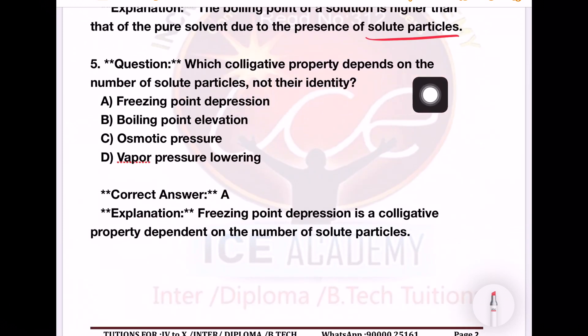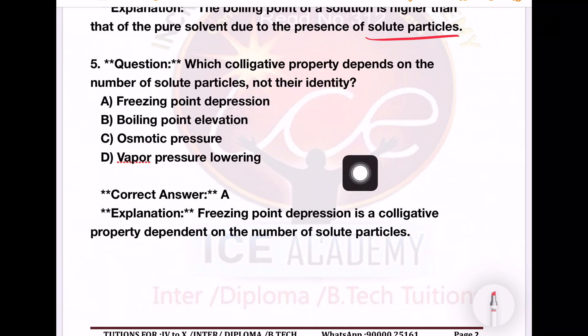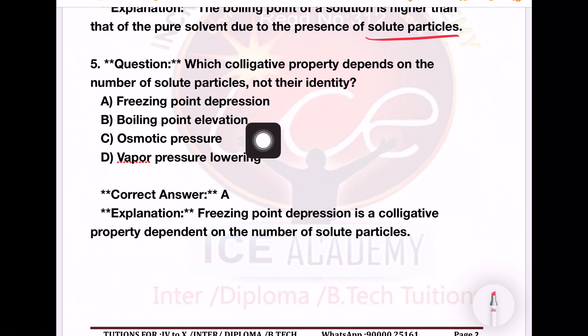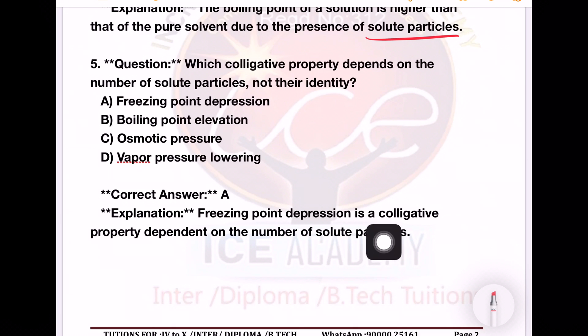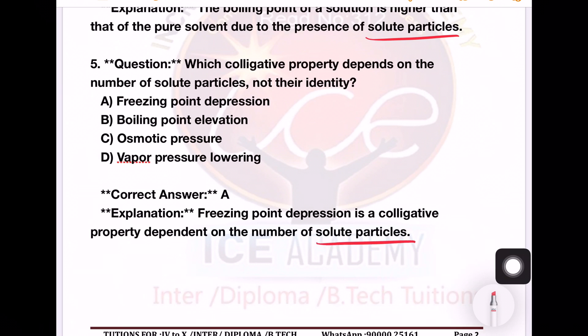Next question: Which colligative property depends upon the number of solute particles and not their identity? Options are: freezing point depression, boiling point elevation, osmotic pressure, or vapour pressure lowering. Freezing point depression is a colligative property that depends upon the number of solute particles. So option A is the right answer.